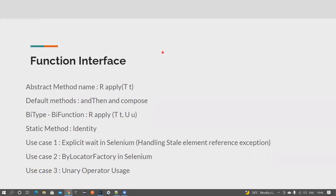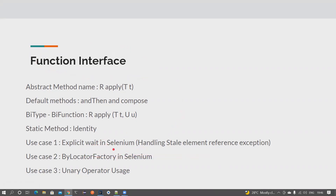Hi friends, welcome back to my channel Testing Minibytes. In this video we're going to see another interesting topic about how we can use the Function interface in our Selenium automation framework. We've already seen how to use a Function interface implementation in explicit wait, and how to handle the StaleElementReferenceException with explicit wait and lambda. Now we're going to see how to use a locator factory with a Function interface implementation using lambda expressions.